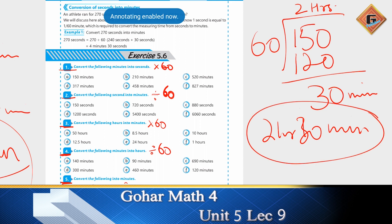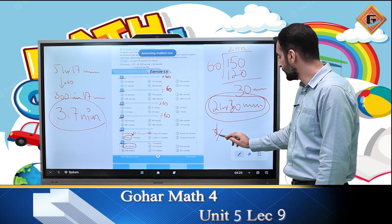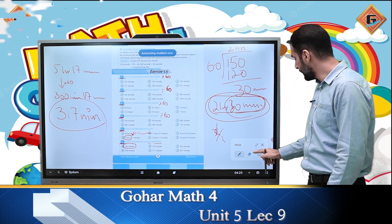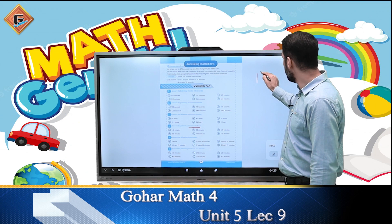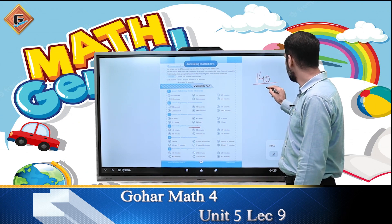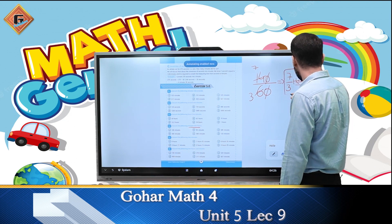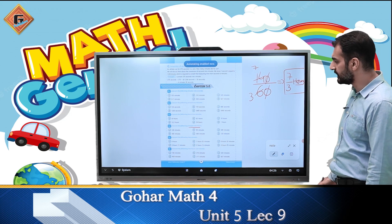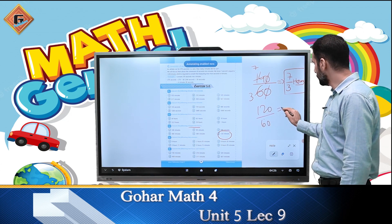जिसको सिर्फ hours में convert करना होगा, वो fraction में आ सकता है। जैसे 140 minutes को hours में convert करने के लिए 60 से divide करेंगे — answer आएगा 7/3 hours। यह सिर्फ hours में रहना है, minutes में convert नहीं करना। 120 minutes completely divide हो जाएगा 60 से — 120 ÷ 60 = 2 hours।